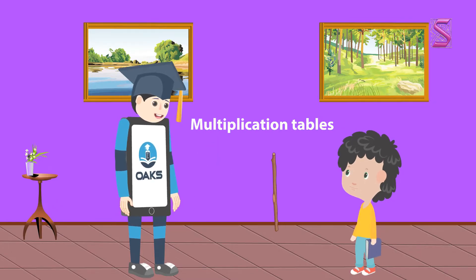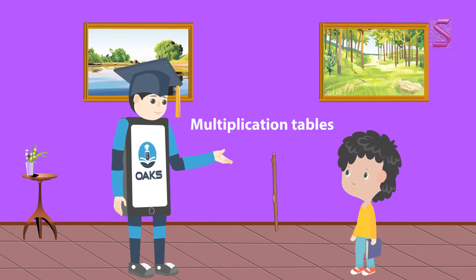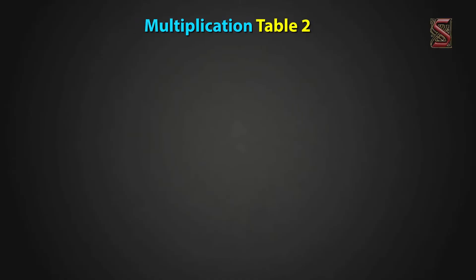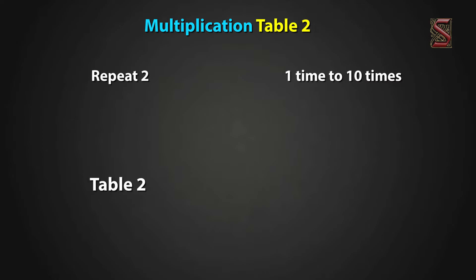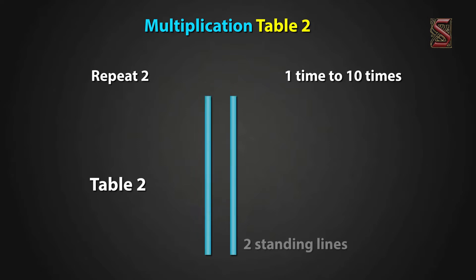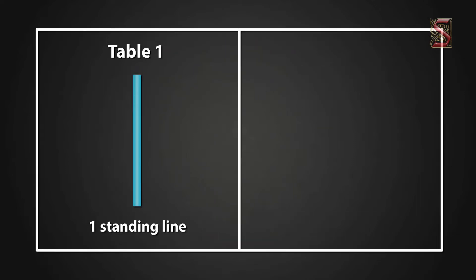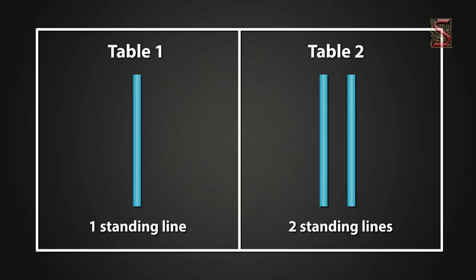Chintu, I will help you understand these multiplication tables. Oaks, I am ready, let's start. For multiplication table 2, we are going to find and learn the product when we repeat 2 from 1 time to 10 times. For multiplication table 2, we have to use 2 standing lines — 1 standing line for table 1 and 2 for table 2. Here we go.